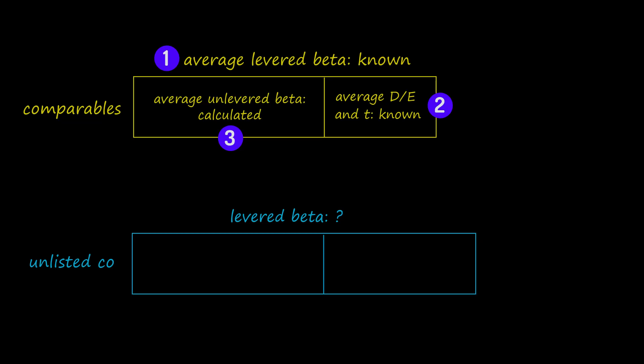Because business risk is similar, that unlevered beta is treated as a suitable estimate of unlevered beta for the unlisted company.